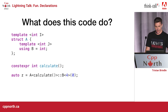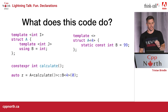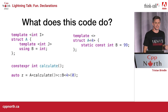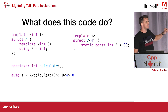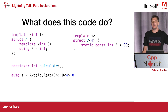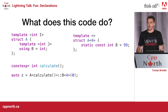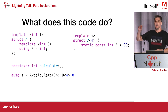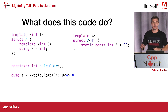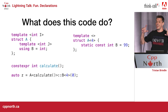There's just one teeny tiny little thing I forgot to mention: there's a specialization of A. So if calculate returns four, we're going to hit the specialization, and now the name B refers not to a type but to a value. So if calculate returns four, A<4>::B is a value of type int, and the following token is not an angle bracket — it's a less-than.